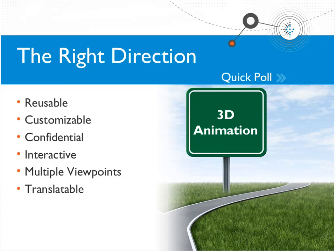3D animation can also be more interactive than video. A learner watching video really just presses play and watches what's going on, whereas with 3D animation we can create interactive engagement. 3D animation also has the ability to show multiple viewpoints — just like on a soundstage, you can move the camera to different areas to capture different perspectives: the pedestrian, the person driving the fork truck, or the overall organization. 3D animation is also easily translatable, as the text can reside outside the animation, giving you flexibility for global needs without having to re-record.